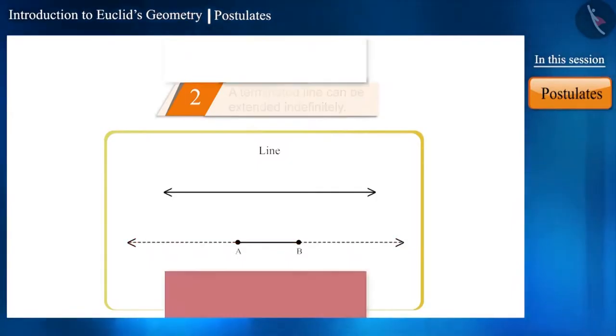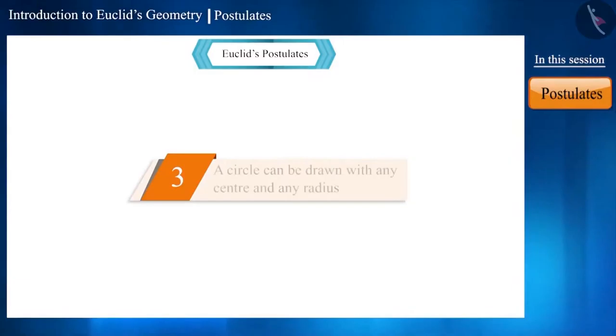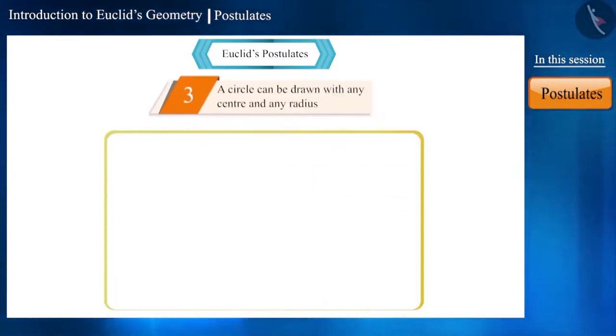The third postulate moves away from a line towards a circle. According to the third postulate, a circle can be drawn with any center and any radius. This postulate indicates that we can draw a circle with any radius by taking any center.